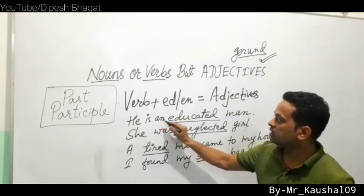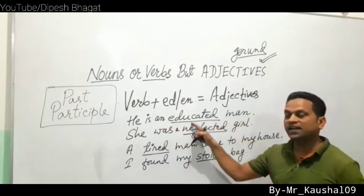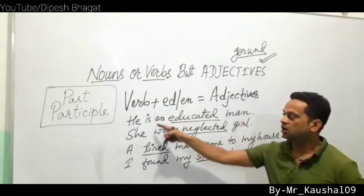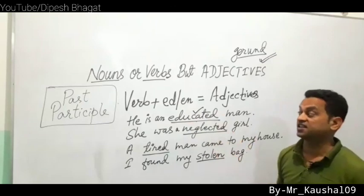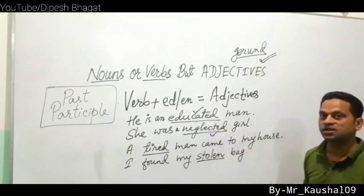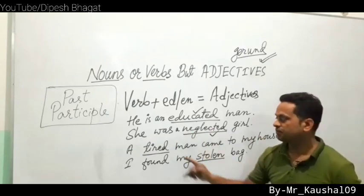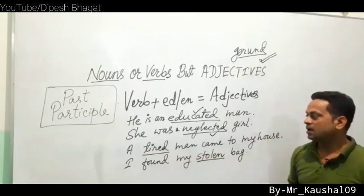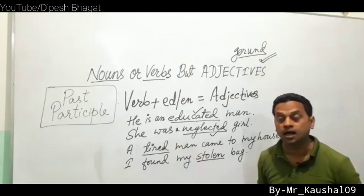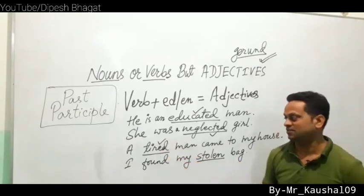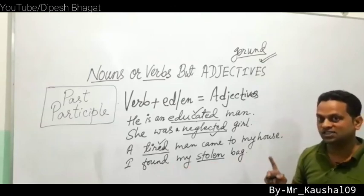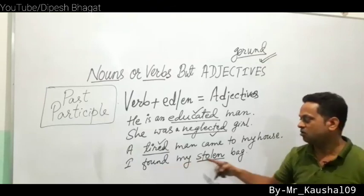More examples of past participle as adjective: 'She was a neglected girl' — neglect + ed = neglected (adjective). 'A tired man came to my house' — tired is a past participle adjective showing what kind of man. 'I found my stolen bag' — stolen (past participle, third form of steal) is an adjective describing the bag.